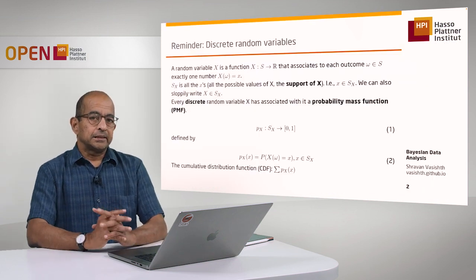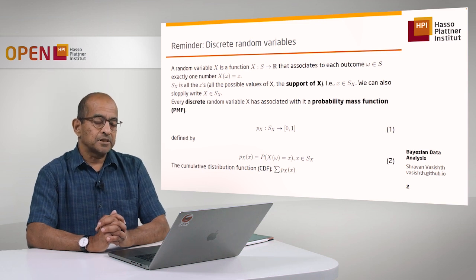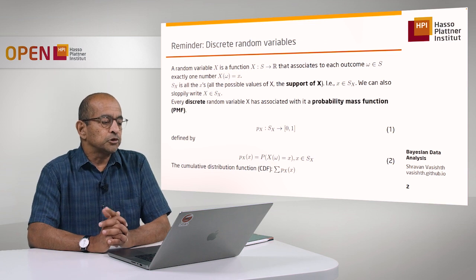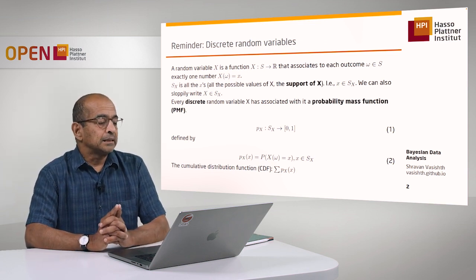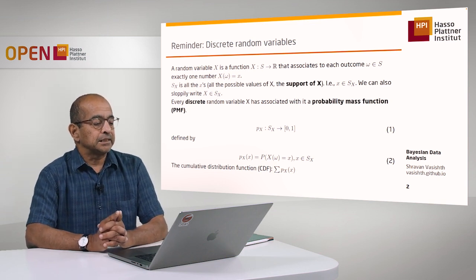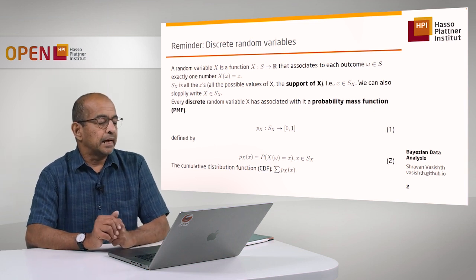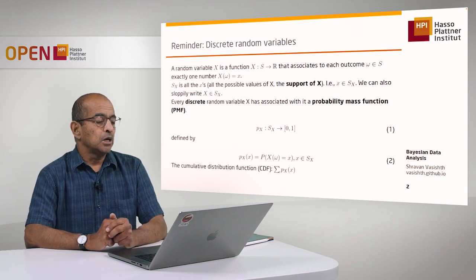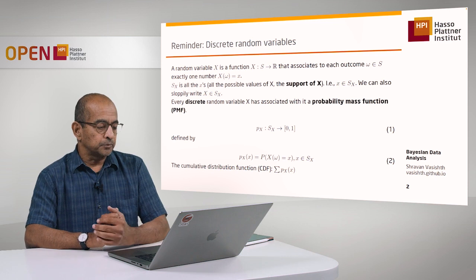Remember what I said earlier: what is a random variable? It's a function that maps a set S — the set of possible outcomes you can get in an experiment — onto a real number. The real number that each event gets mapped onto is called the support of X, or S of X.